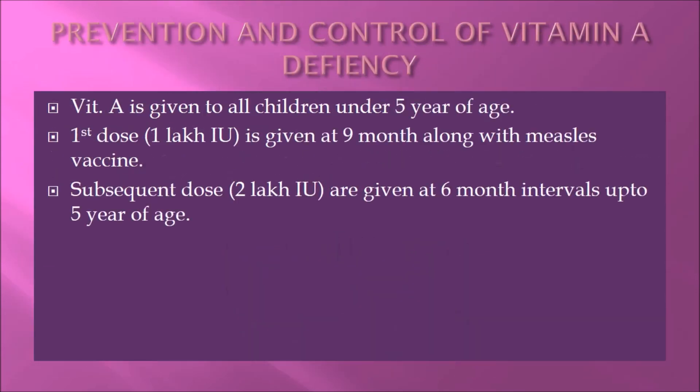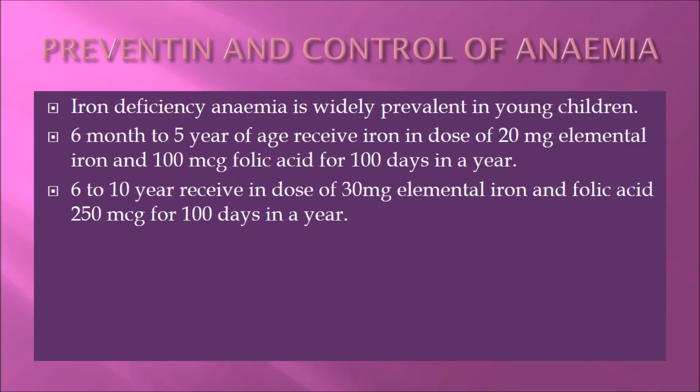For control of Vitamin A deficiency, Vitamin A is given to all children under five years of age. The first dose of one lakh international units is given at nine months of age along with the measles vaccine, and subsequent doses of two lakh international units each are given at six-month intervals up to five years of age.